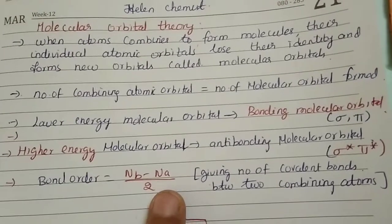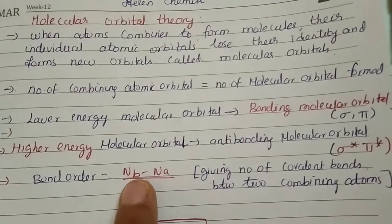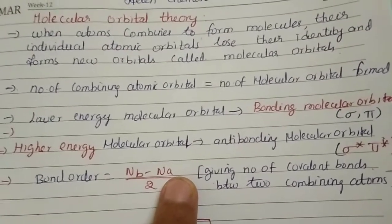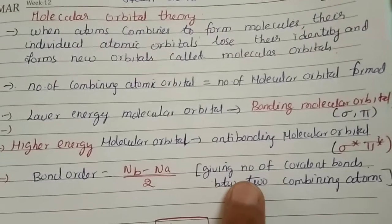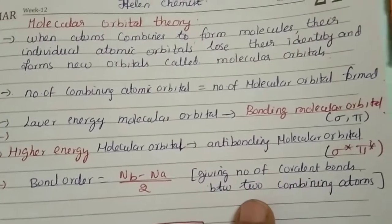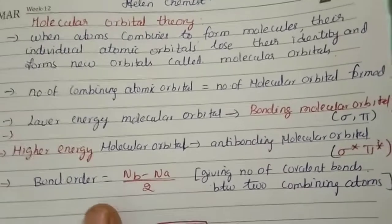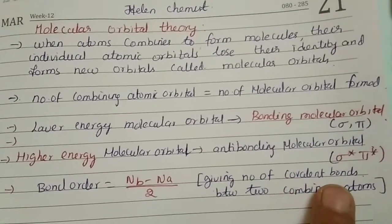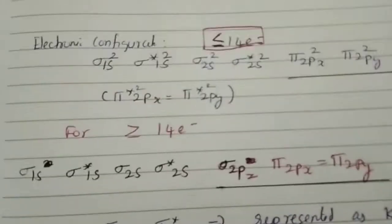Bond order formula is (Nb minus Na) divided by 2, where Nb is the number of electrons in bonding molecular orbitals and Na is the number of electrons in antibonding molecular orbitals. This bond order gives the number of covalent bonds between two combining atoms. This is the most important rule.